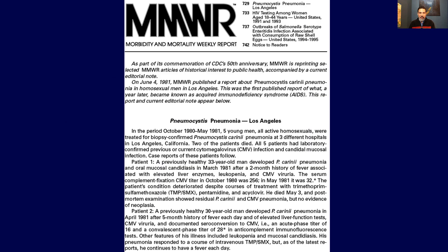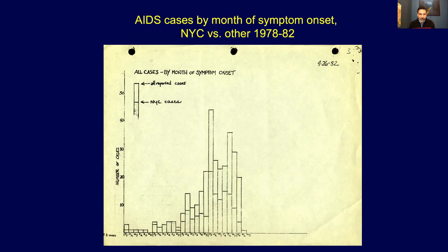So first, where it began. A good place to start is this MMWR that came out in 1981, which published a case series of cases of pneumocystis pneumonia in LA that were detected. These were unusual and were occurring among previously healthy young men who appeared to have very weakened immune systems. This is the first case report of what eventually came to be known as AIDS in the early 1980s.